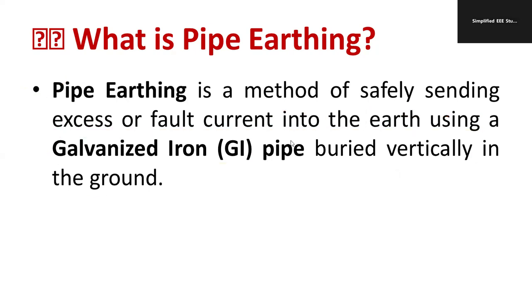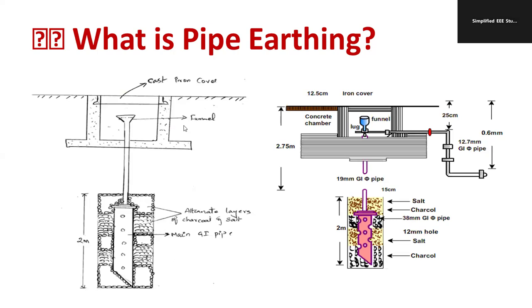Let us go into greater details. This is a basic structure of pipe earthing. We can see a cast iron cover which is openable and easy to operate. We have a funnel here where you can pour salt as well as water. Below that there are alternate layers of charcoal. The main specialty is that we're using the rod.